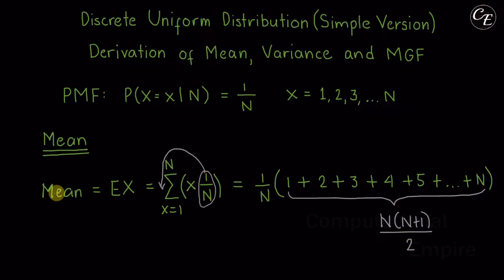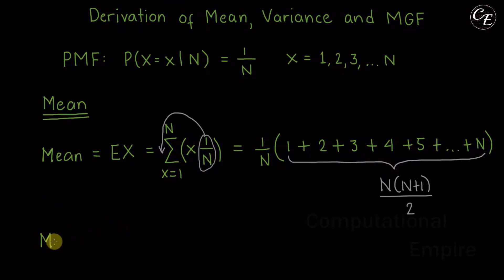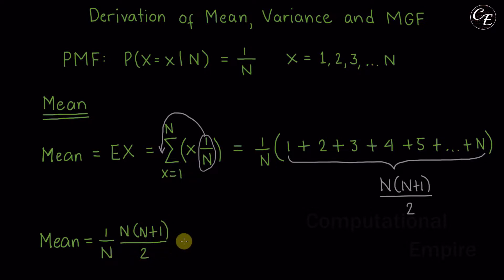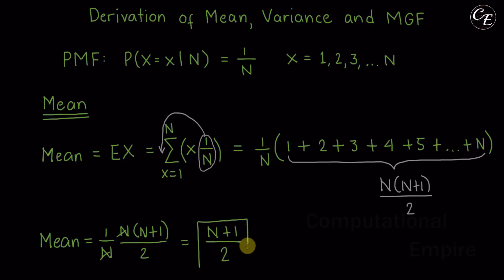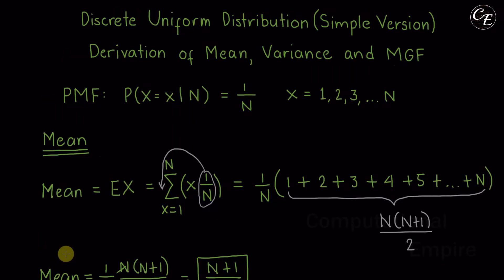So now the mean will be equal to 1 over n times n(n+1)/2. We can cancel out the n over n, and we are left with (n+1) over 2. So we have now the formula for the mean for this discrete uniform distribution where the value of the random variable is from 1 to n.